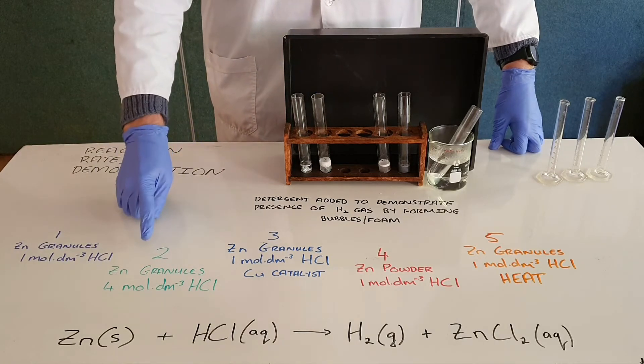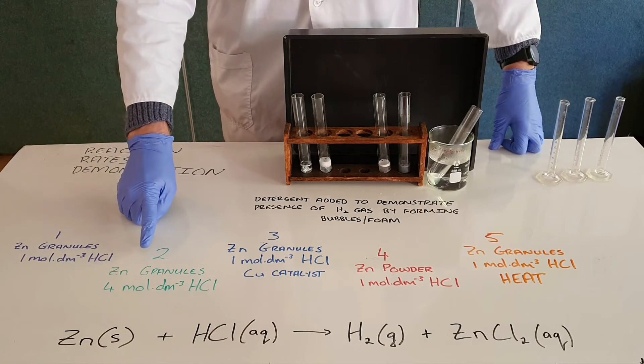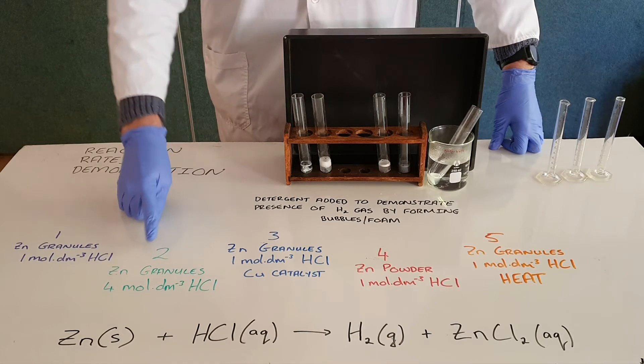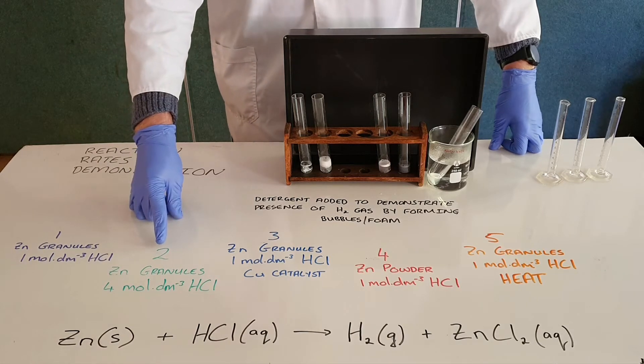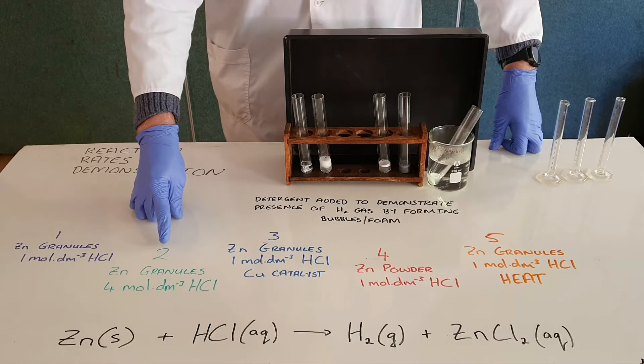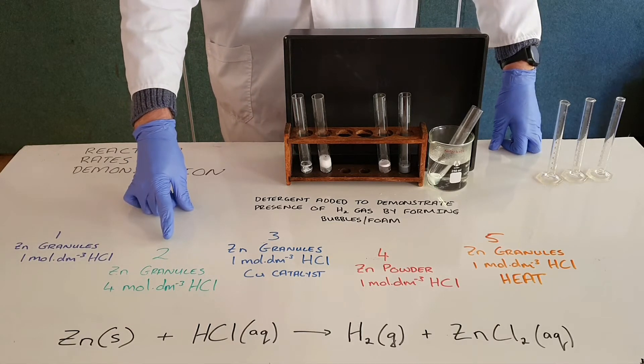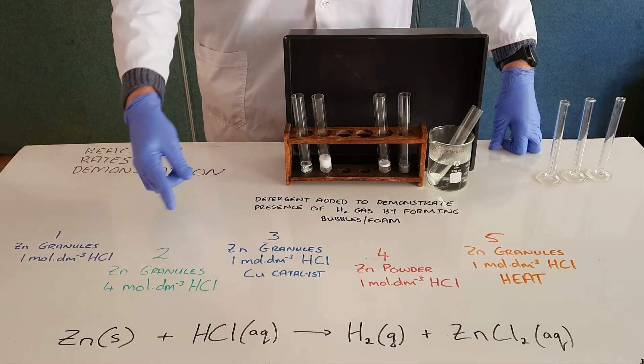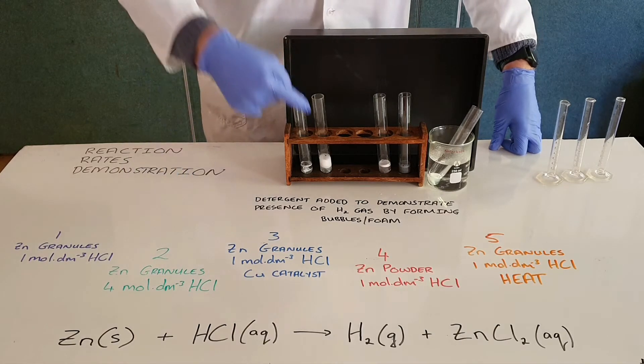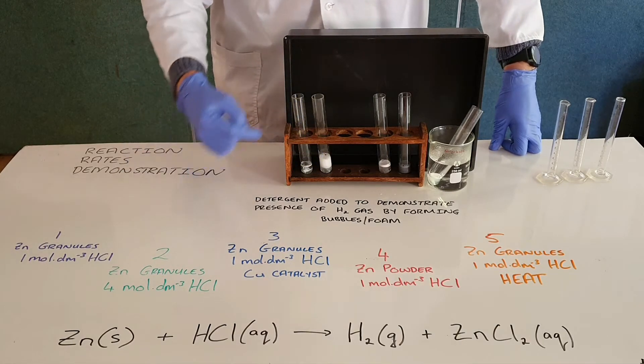What we then have in our second test tube, this one over here, is a four molar solution of hydrochloric acid. Once again by collision theory, because there are now more hydrochloric acid molecules present, we would expect more collisions and therefore more successful collisions to occur and a faster rate of reaction.